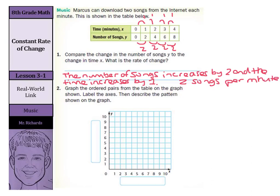Now, if I want to graph the ordered pairs from the table on the graph shown and label the axes, we're actually going to put our time here on the X in minutes. It's also important to label our units. And then our Y-axis is actually going to be our number of songs.